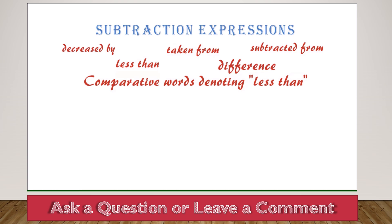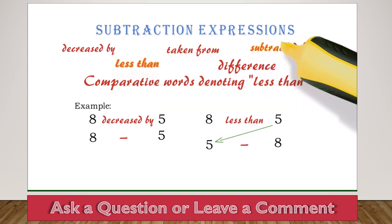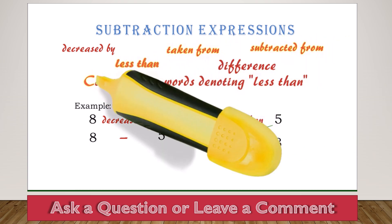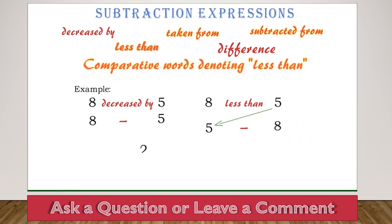One important thing to know about subtraction expressions is the order matters. If we have 8 decreased by 5, this is 8 minus 5 — straightforward. But if you have 'less than,' the second number is written first, or we can say it's written backwards. So 8 less than 5 is 5 minus 8. For subtraction, if you have 'less than,' 'subtracted from,' 'taken from,' or any comparative words that denote less than, we write the second number first. For example, 'he is 2 years younger than x' will be x minus 2.